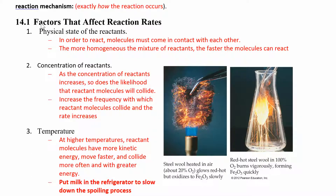Let's start with some factors that affect the rates of the reaction. There are four we're going to talk about. The first one is the physical state of the reactants. In order to react, molecules have to come in contact with each other — they have to hit each other. So the more homogeneous the mixture is, the easier it is for them to find each other, and the faster the molecules will react.